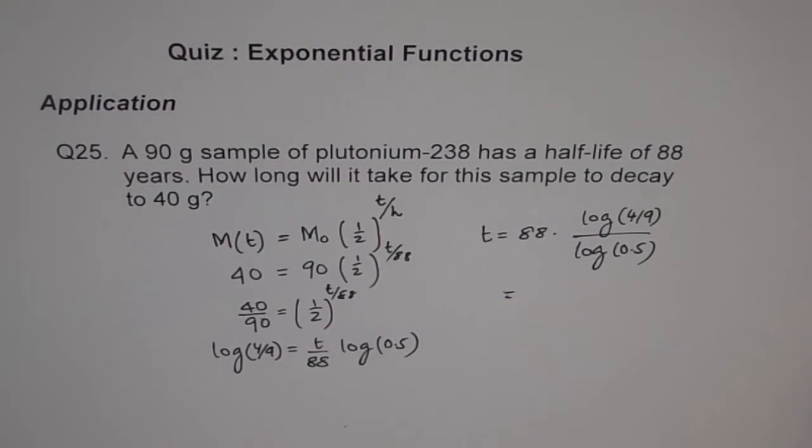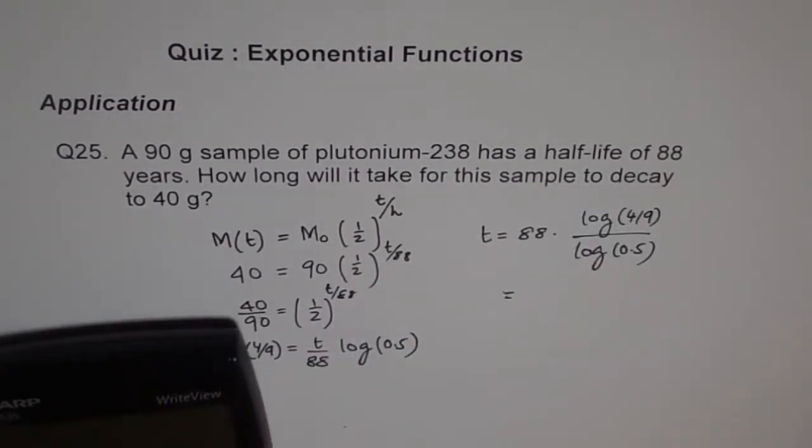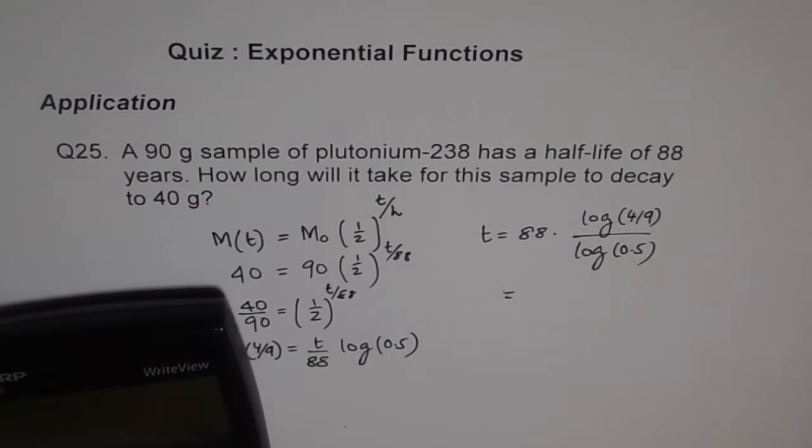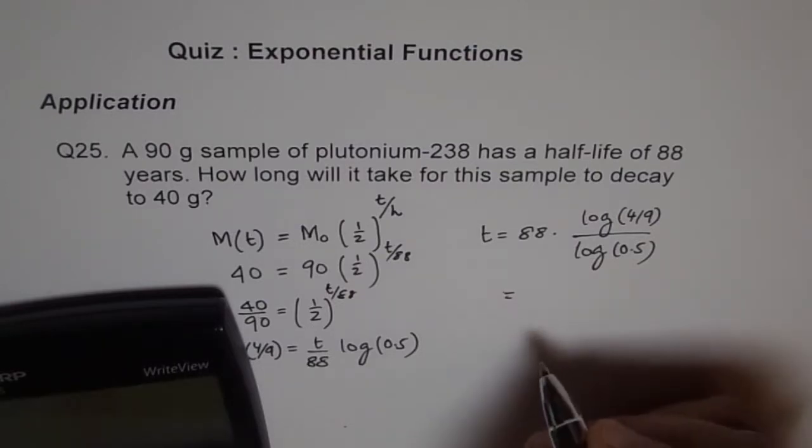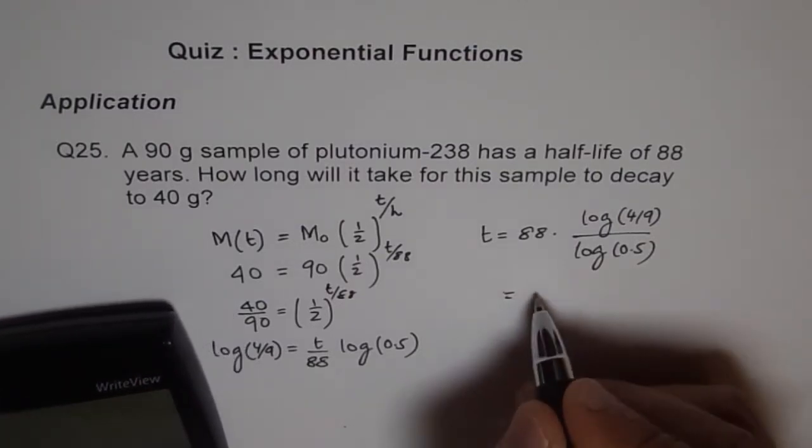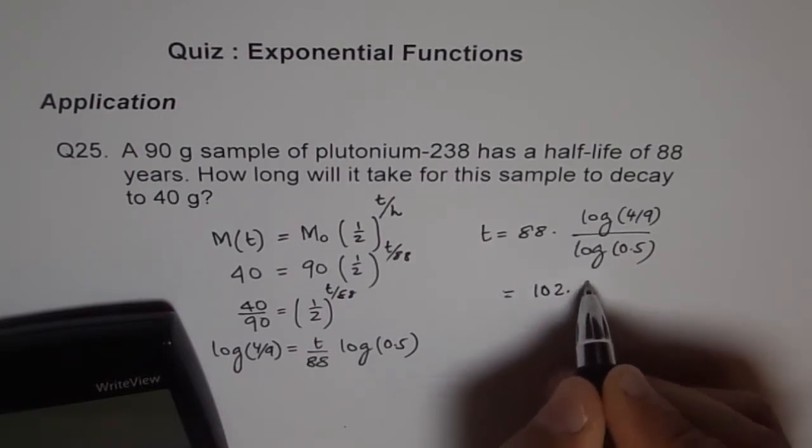And we can use calculator to find this answer. So let's do log portion first. Log 4 divided by 9 within brackets, divided by log of 0.5 within brackets, equals to 1.169.